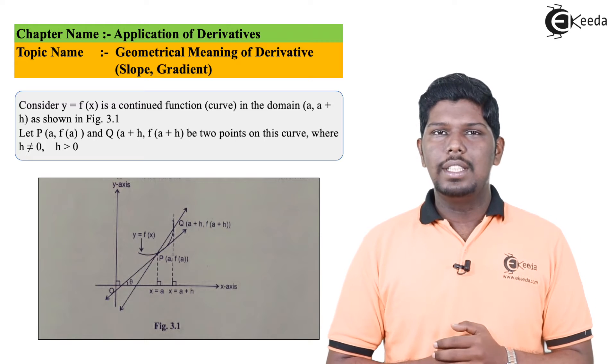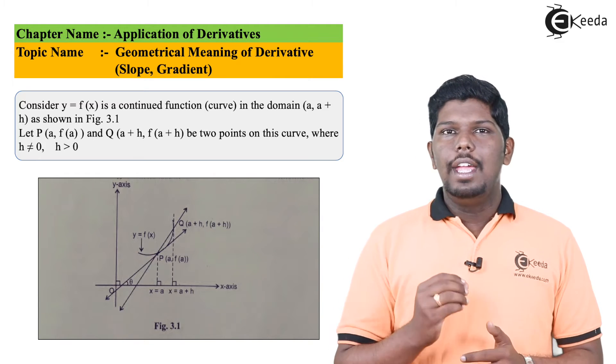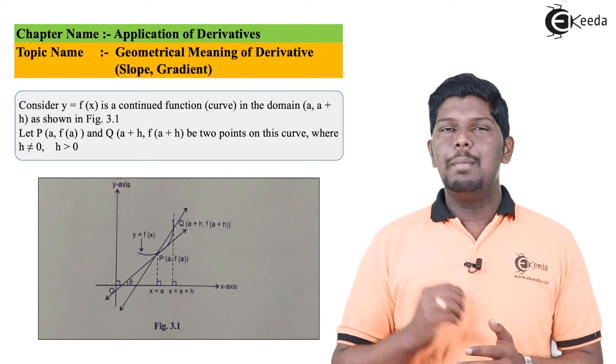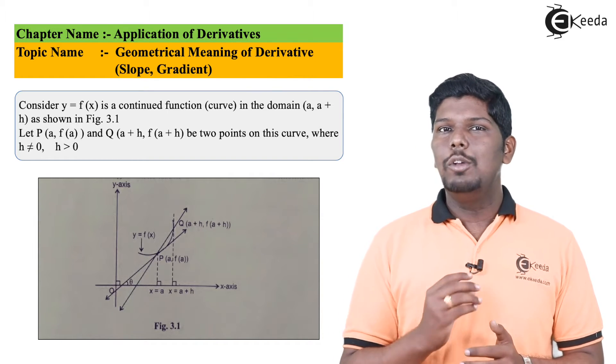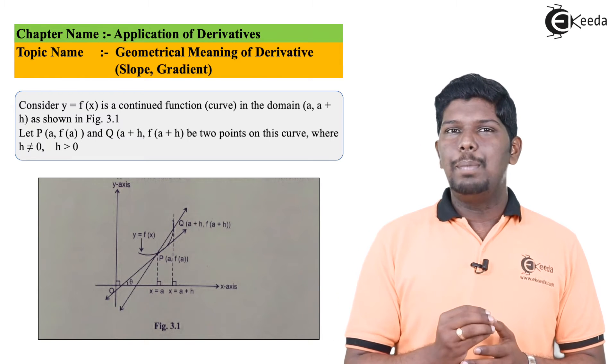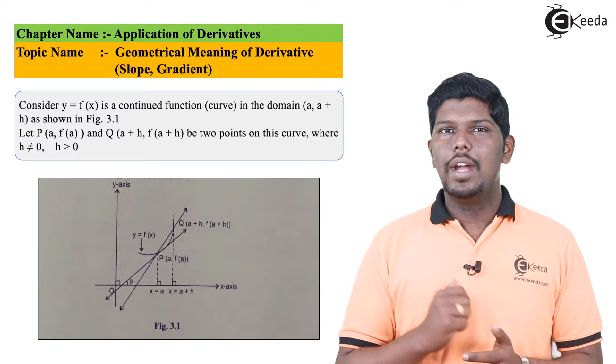So if I say difference of y coordinates, that is y2 minus y1, we have f(a+h) minus f(a). In the denominator, plus a and minus a will be cancelled and h will be left in the denominator. So the formula of slope will be [f(a+h) - f(a)]/h.